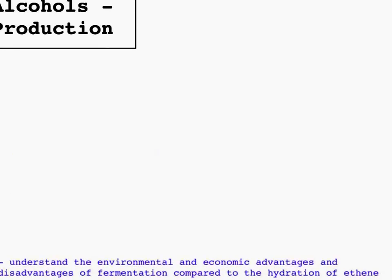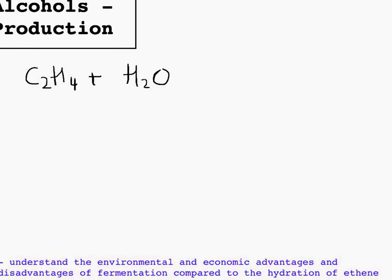If we compare that production of ethanol to the production of ethanol via hydration of ethene, hydration of ethene is where we get C2H4 ethene, and we add water to it. It's an addition reaction, so hydration is the addition of water, and we make ethanol.